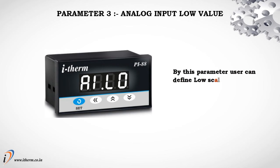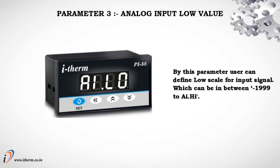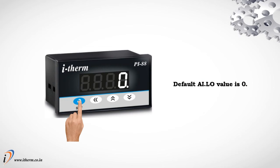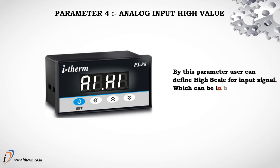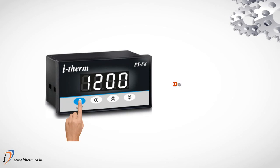Parameter 3: Analog Input Low Value. By this parameter, the user can define the low scale for the input signal, which can be between minus 1999 and the analog input high value. The default analog input low value is 0. Parameter 4: Analog Input High Value. By this parameter, the user can define the high scale for the input signal, which can be between the analog input low value and 9999. The default analog input high value is 1200.